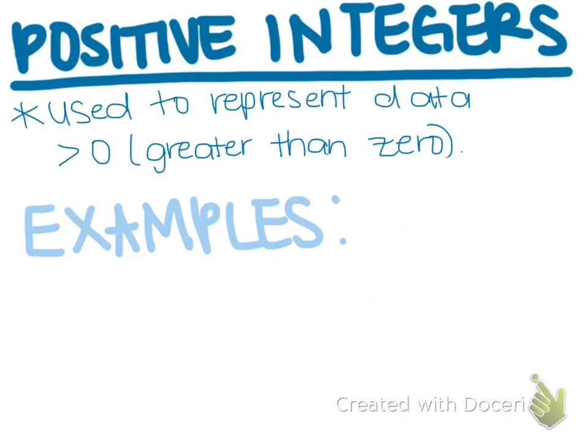Some examples of positive integers are 1, 12, and 200. Why don't you think of one more and add that to your notes.